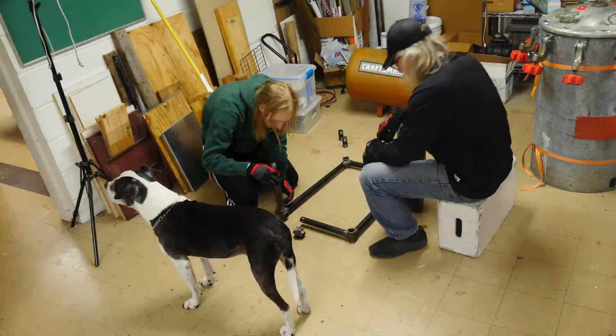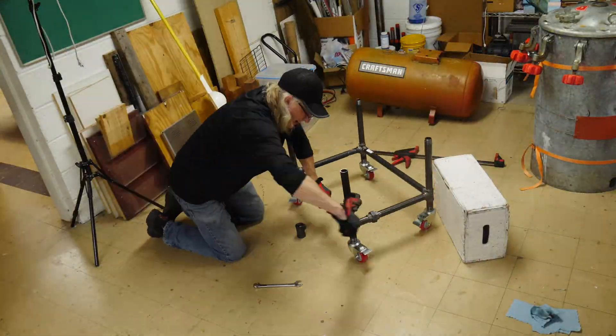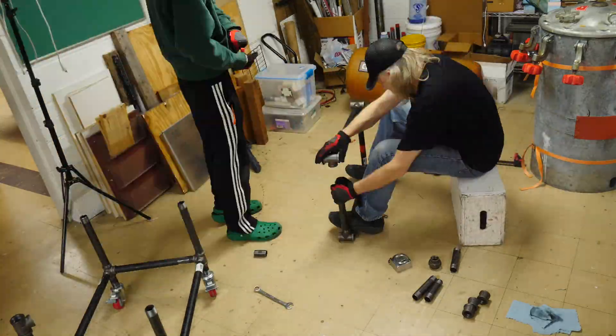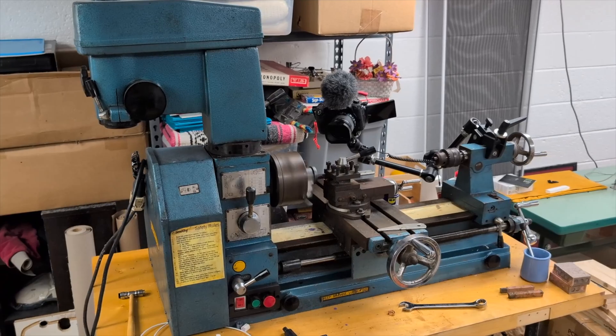We'll start by making the base frame on the bottom where the compressor tank is going to go, and this is the top frame that's going to hold the pressure tank, and we have to meld those two together.